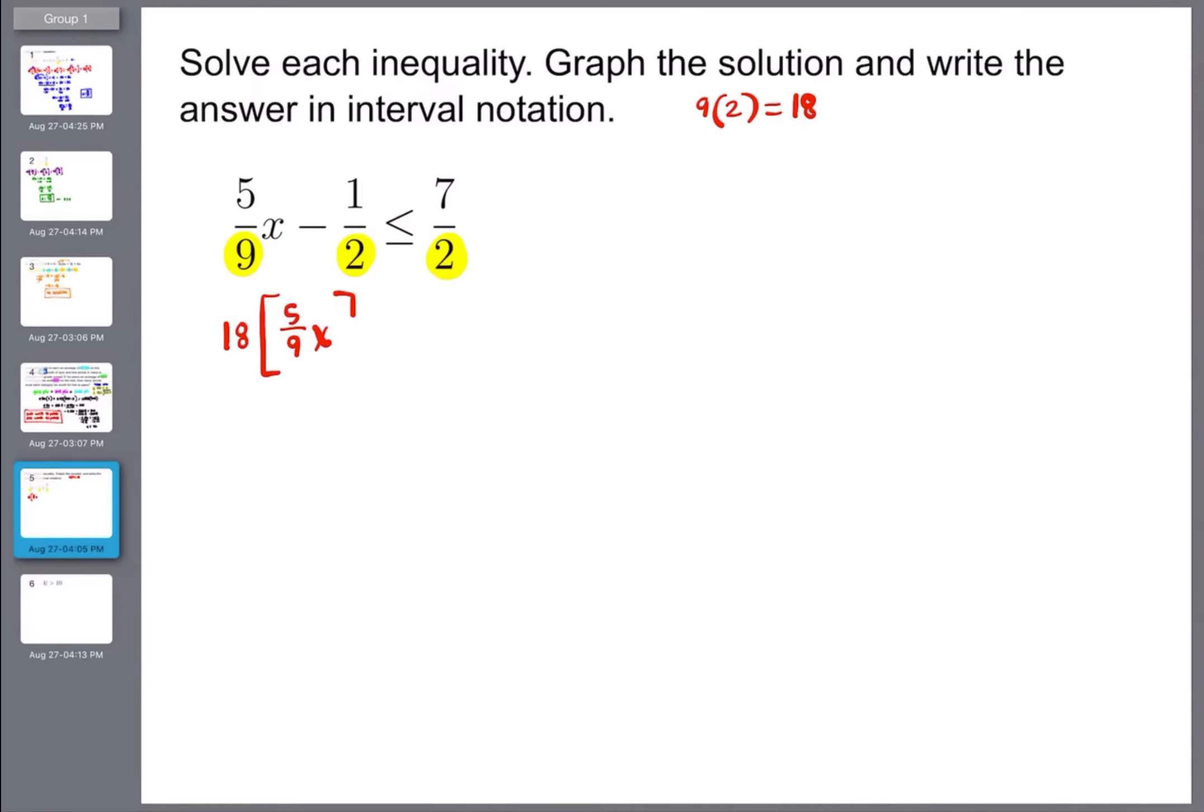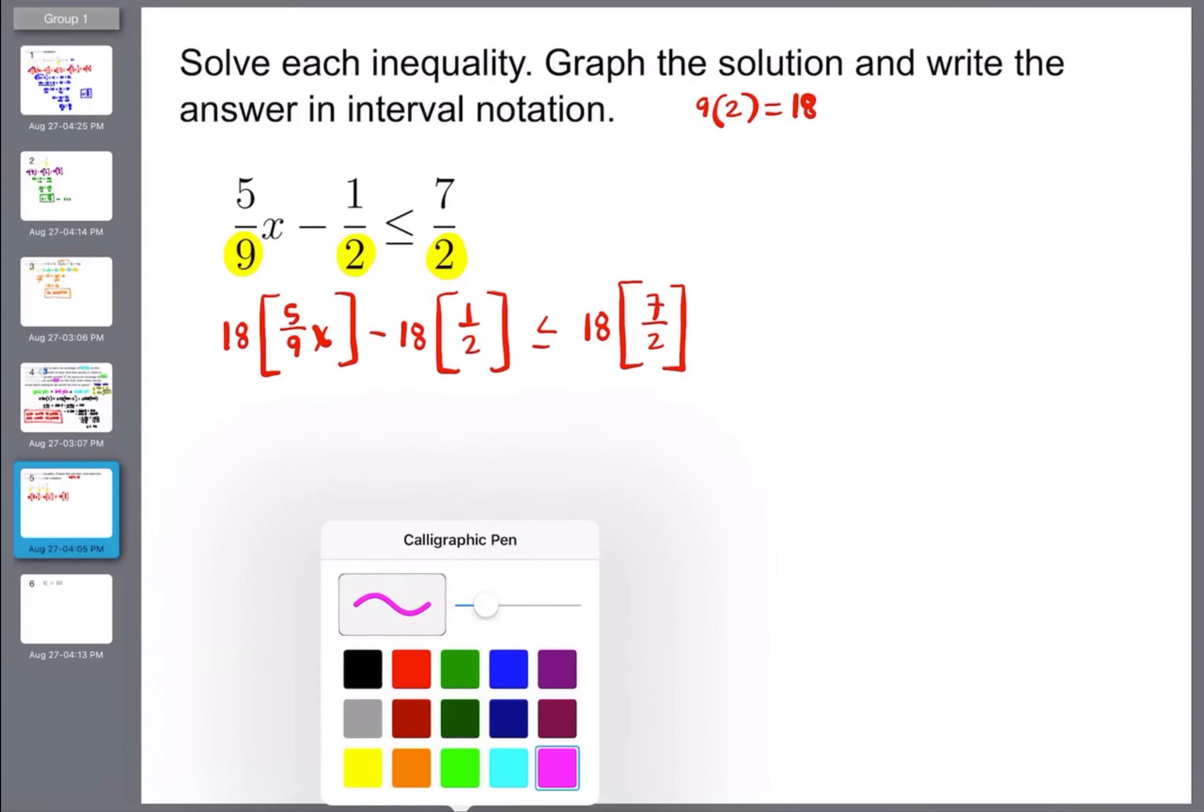So 18 times five ninths x minus 18 times one half is less than or equal to 18 times seven over two. All right, and this is one of those benefits of having the negative sign assumed to be in the top of the fraction, because then you're not dividing or multiplying by a negative, causing you to have to flip your inequality. When we multiply it through, remember, it's going to get multiplied by the top. So 18 times 5 is 90, and 90 over 9 is simply just 10. So that's 10x. When we do the second one, 18 times 1 is 18. Divided by 2 gives me back 9.